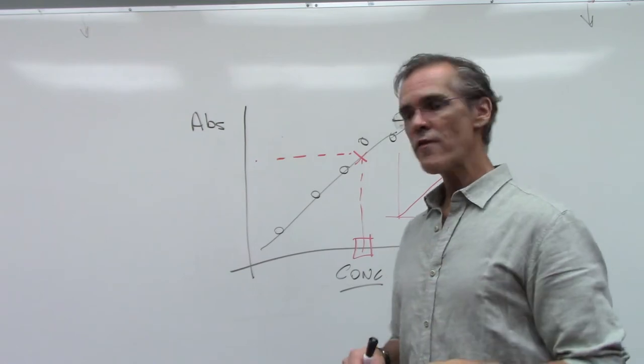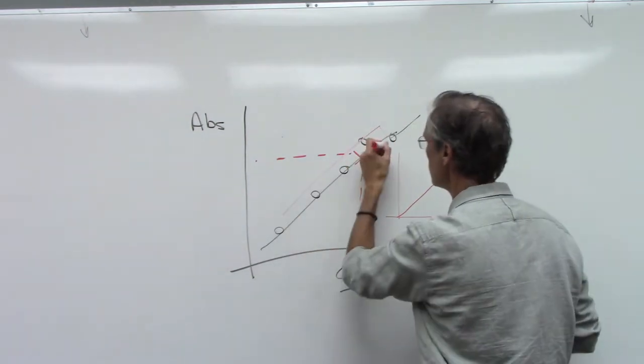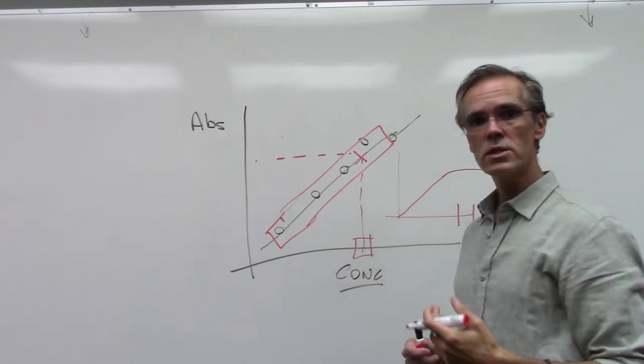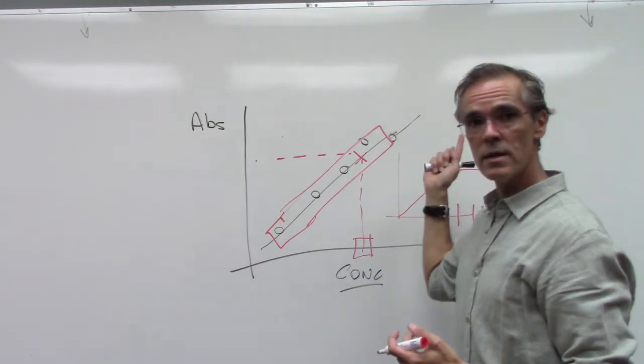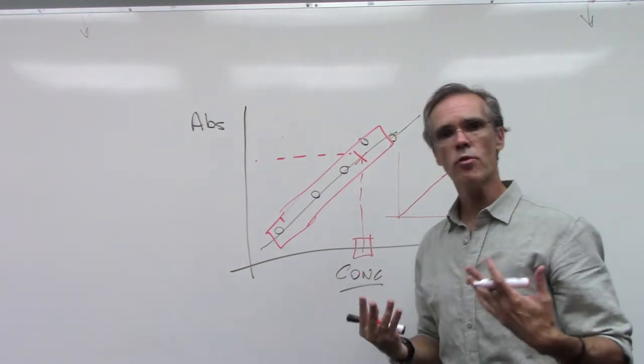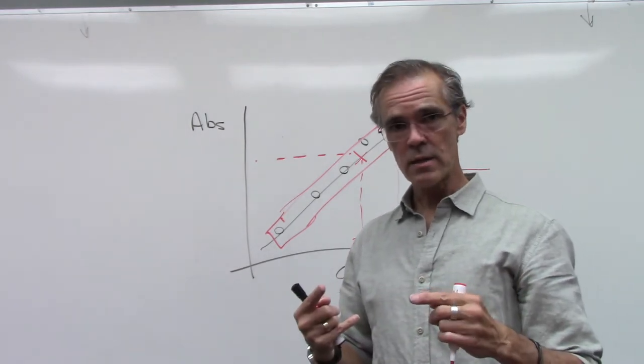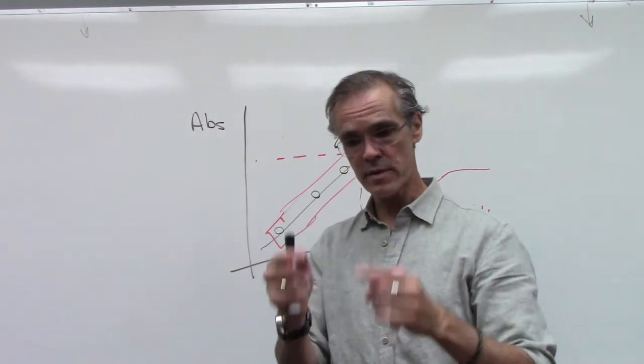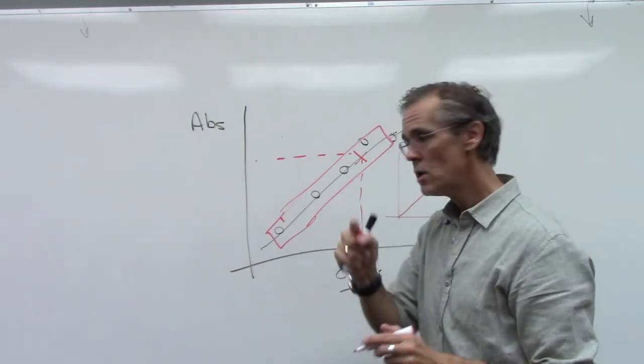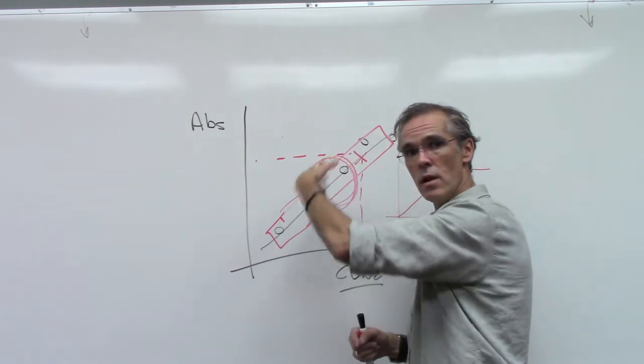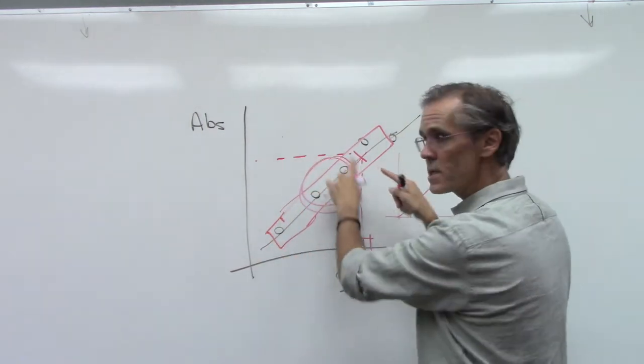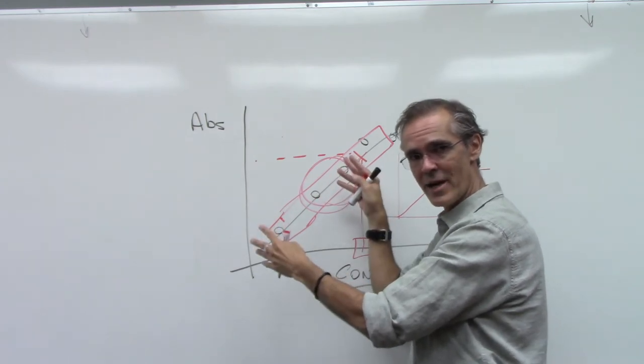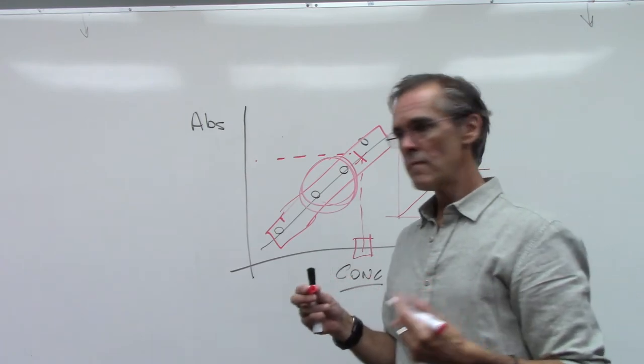Most of the time what we're interested in is having the absorbance and deciding what's the concentration, and then we move on with our experiment. So how do we do this? It's very simple. If you have values higher than your calibration curve, what you need to do is dilute that sample. You dilute, take measurements, dilute more if it's still out, until you hit somewhere around the middle of that area.